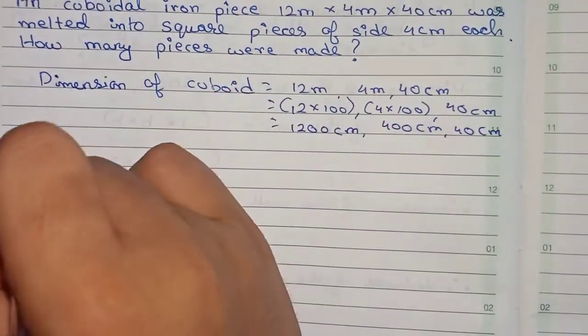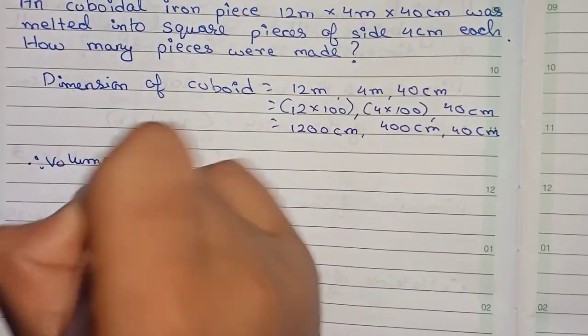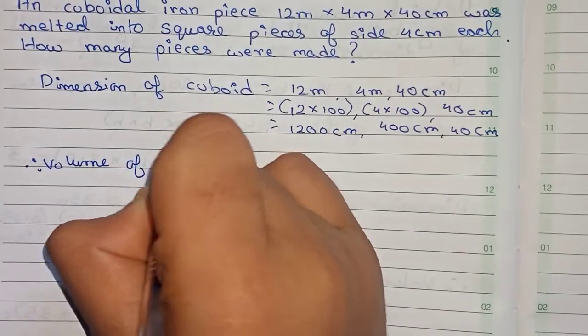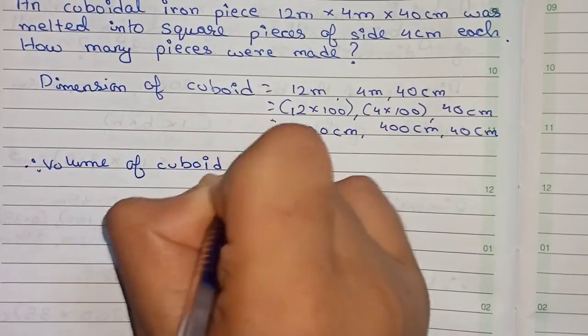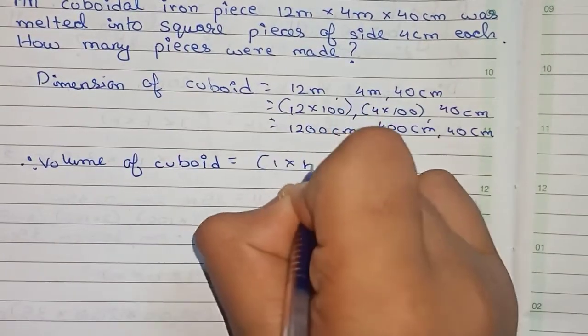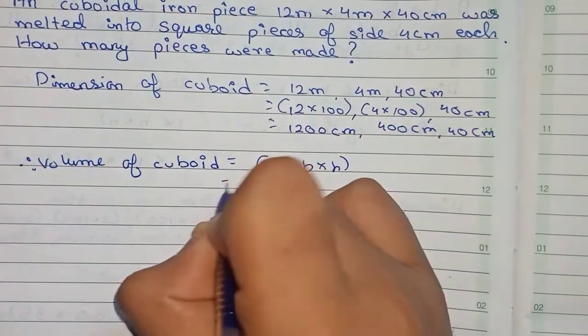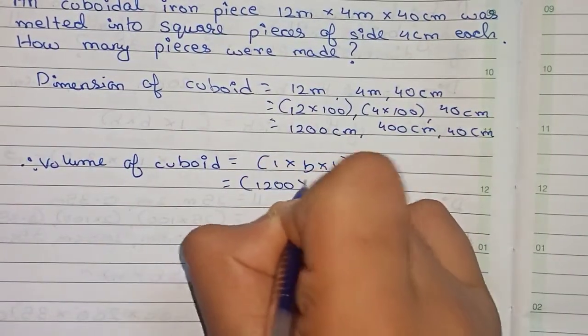So now we find the volume of the cuboid. This is equal to length into breadth into height, so it will be equal to 1200 into 400 into 40 centimeter cube.